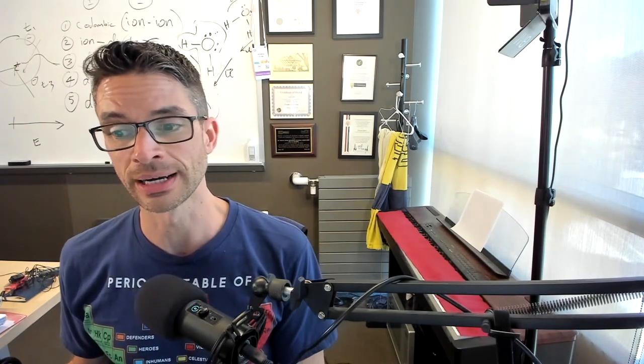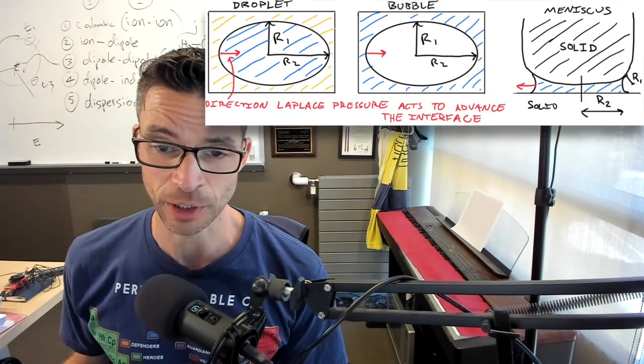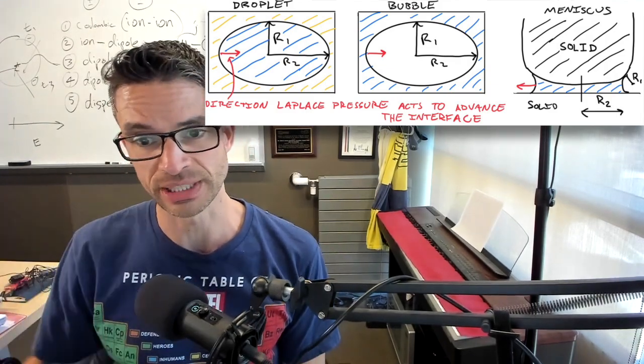All right. So the next concept is the Laplace pressure. The Laplace pressure is the pressure exerted by surface tension, or is the extra pressure inside a bubble or droplet or meniscus that is in excess of atmospheric pressure that is due to surface tension.